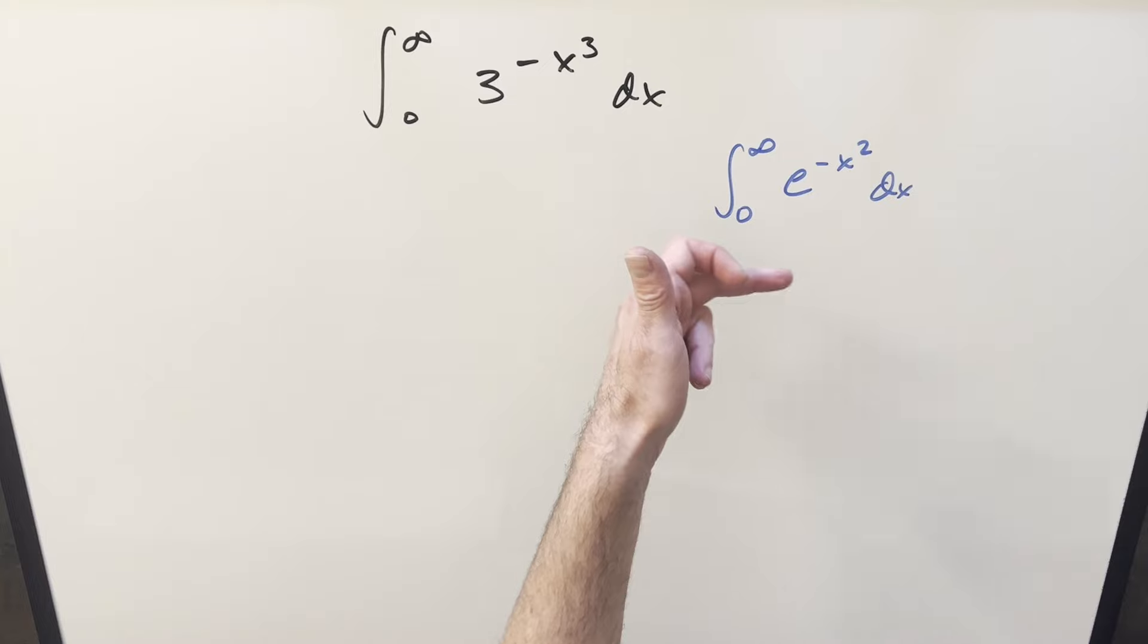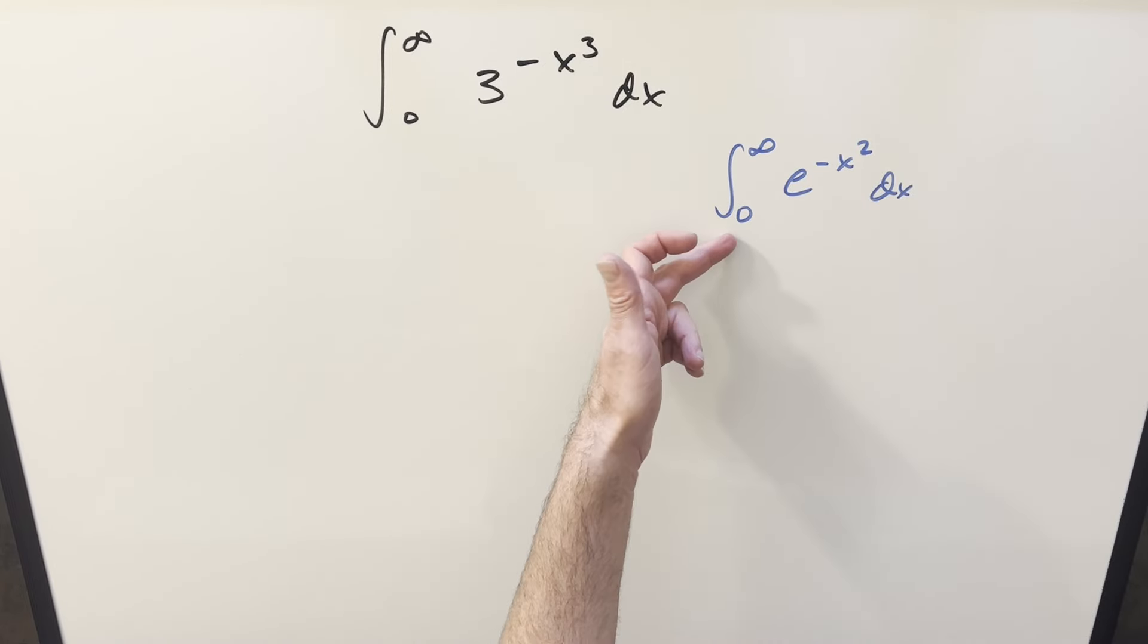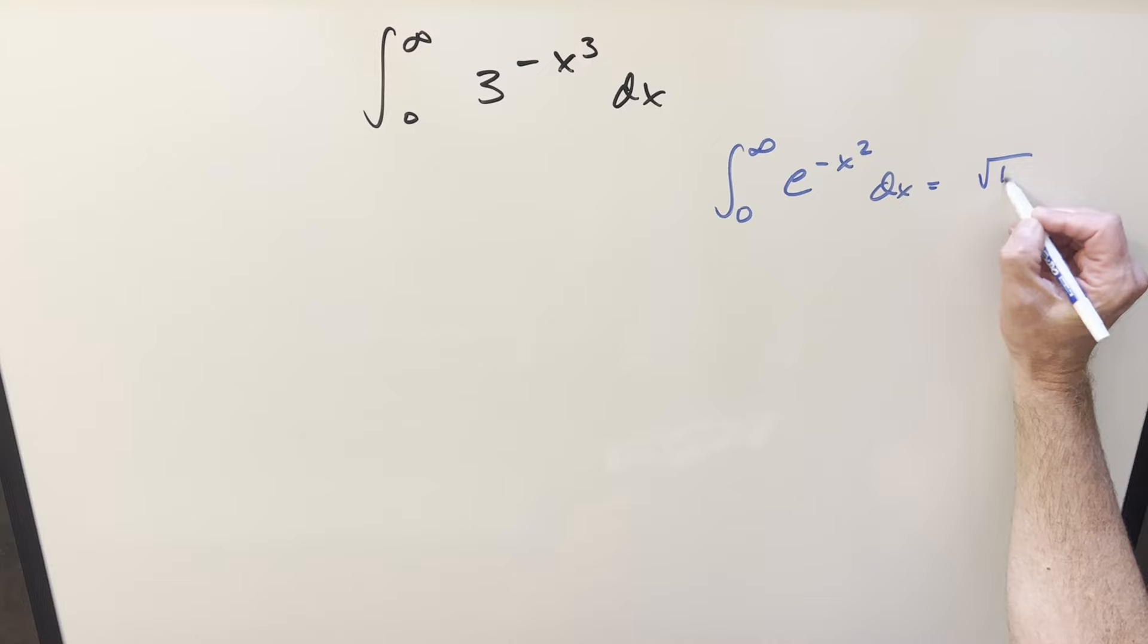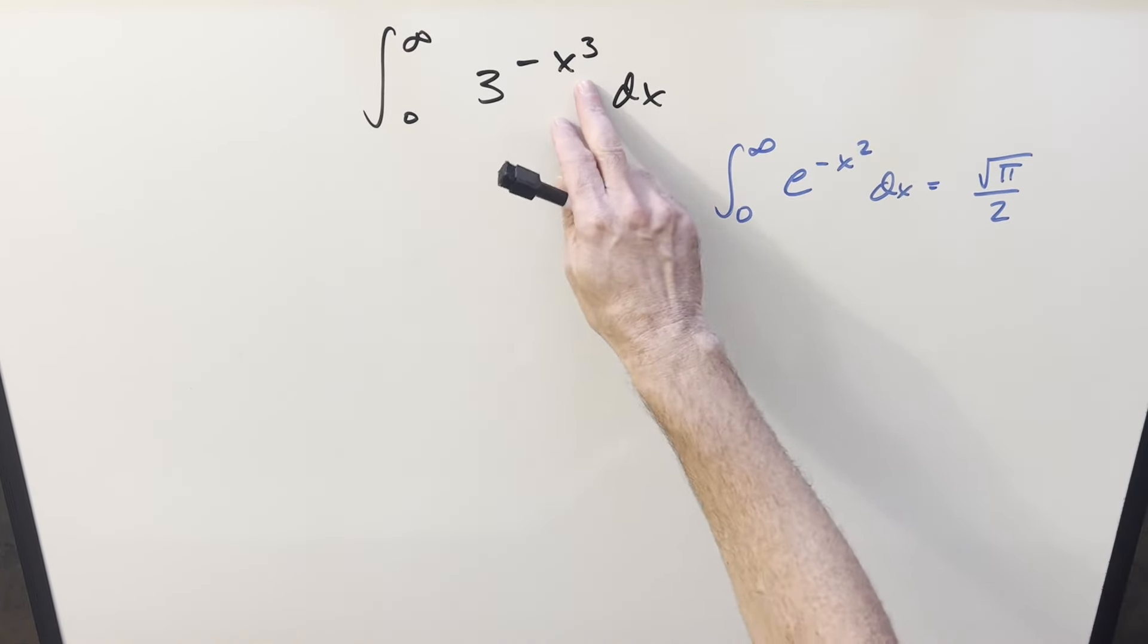And actually, the full Gaussian integral is minus infinity to infinity, but a lot of times you see it like this, 0 to infinity. The value for this is going to be just square root of pi over 2. Well, first of all, the exponent we have here is not 2. We've got a 3 there.